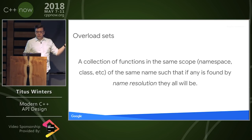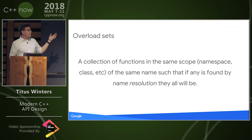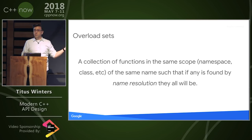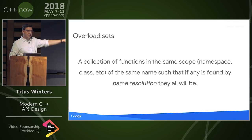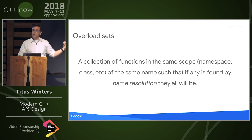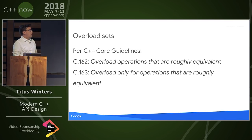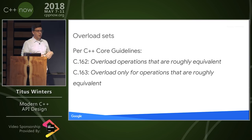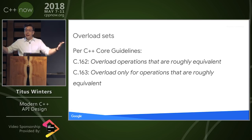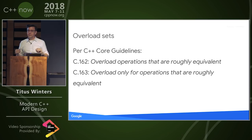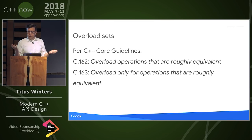Formally, an overload set is a collection of functions in the same scope, of the same name, so that if any of them is found by name lookup, they will all be found. But this only captures the syntax, not the semantics of a good overload set. The core guidelines says: overload operations that are roughly equivalent — if two things are doing the same thing, name them the same. And overload only for options that are roughly equivalent — if they're named the same thing, they'd better be doing the same thing.